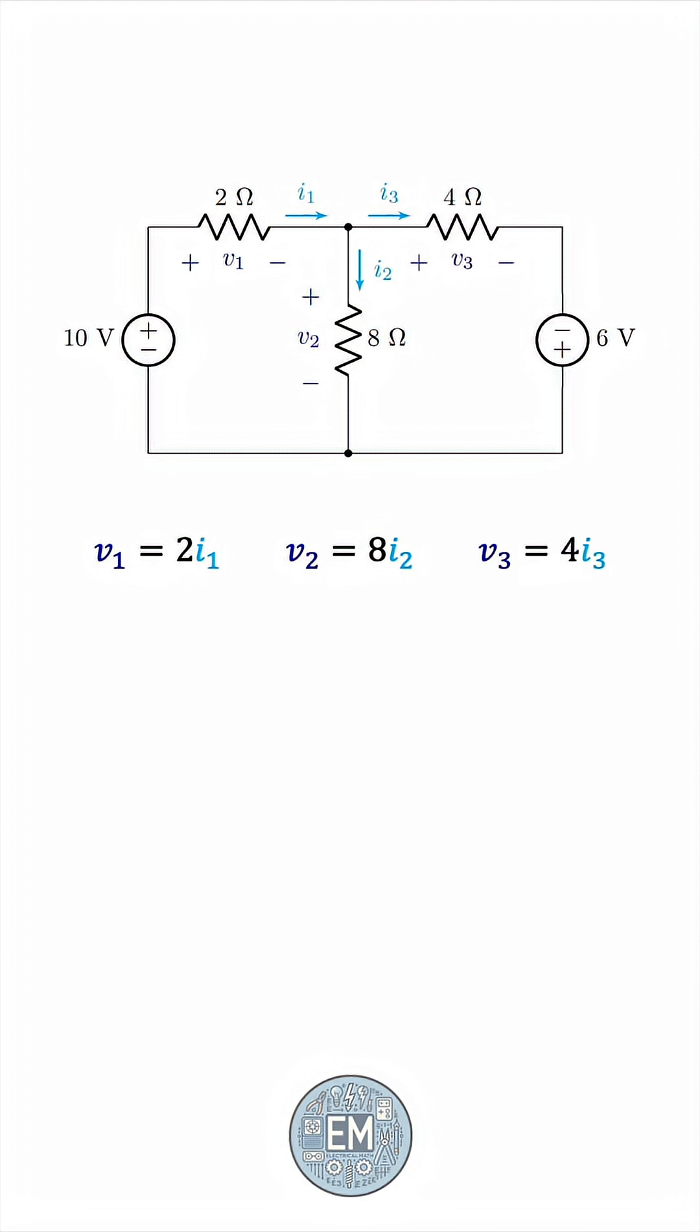The next step is to apply KCL, Kirchhoff's current law. We see that the current I1 splits into two chunks, I2 and I3. So I1 must be equal to the sum of I2 and I3 by KCL.